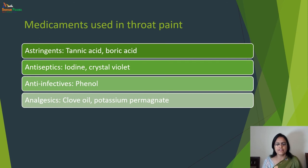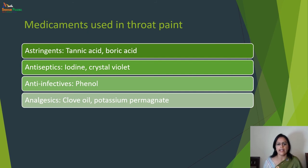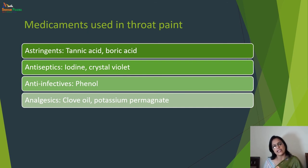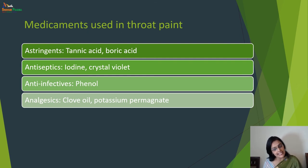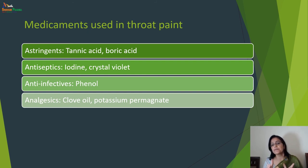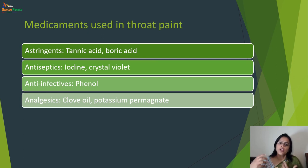Medicaments used in throat paint include: astringents such as tannic acid and boric acid; antiseptics such as iodine and crystal violet; anti-infectives such as phenol; and analgesics such as clove oil and potassium permanganate.